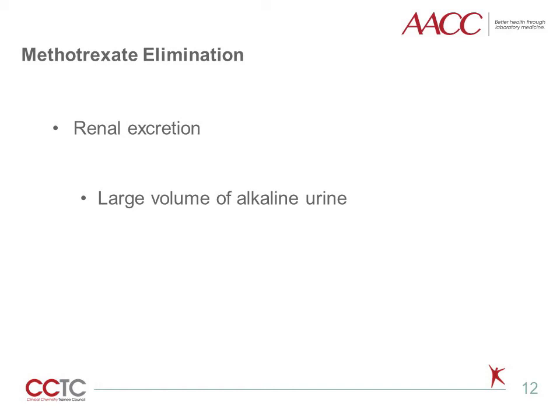The route of elimination of methotrexate is primarily renal excretion. During a period of high serum concentrations, particular attention must be paid to maintaining output of a large volume of alkaline urine. The pKa of methotrexate is 5.5, so small decreases in urine pH result in significant reduction in its solubility. Keeping urine pH alkaline diminishes the risk of intratubular precipitation of the drug and obstructive nephropathy during the treatment period. So monitoring serum concentration provides the basis for decisions related to timing of initiation and continuance of recovery treatment and for management of urine pH.